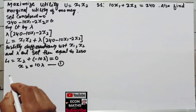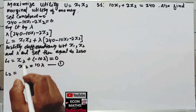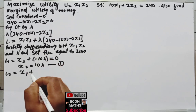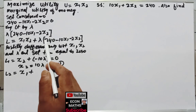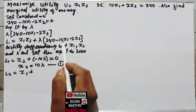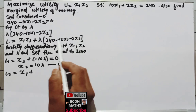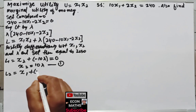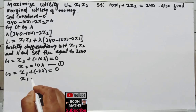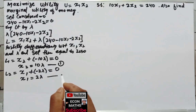Similarly, differentiating the Lagrange's function with respect to x2: the derivative of x2 is 1, so we get x1. Lambda times minus 2x2 gives minus 2 lambda. Setting equal to 0, x1 is equal to 2 lambda. Let this be equation 2.